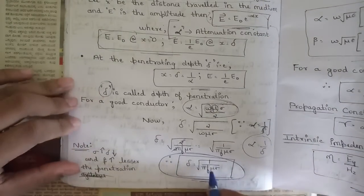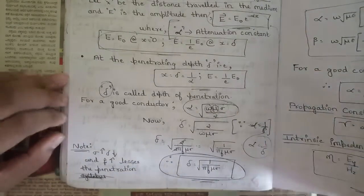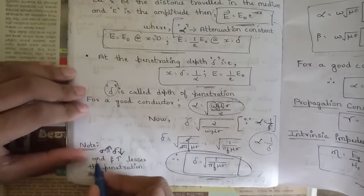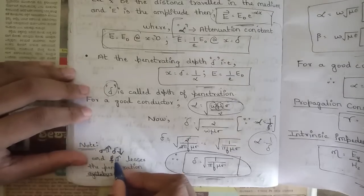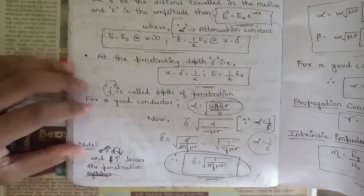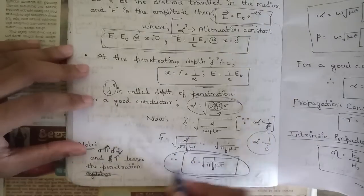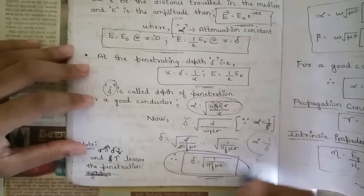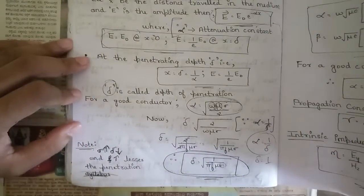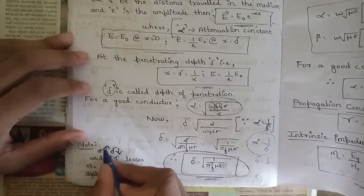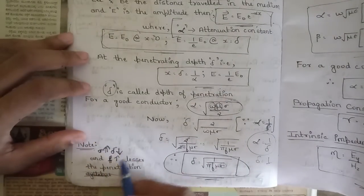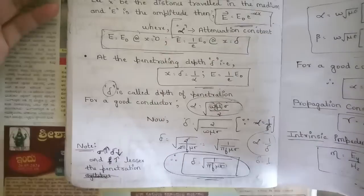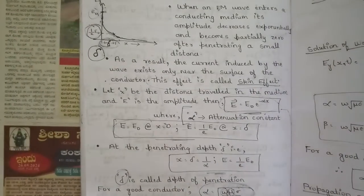We can note a few important observations: whenever conductivity (σ) increases, the depth of penetration decreases, and whenever frequency (f) increases, penetration is lesser. This is because δ = √(1/πfμσ), so δ is inversely proportional to both σ and f. This was the derivation of skin effect and depth of penetration.